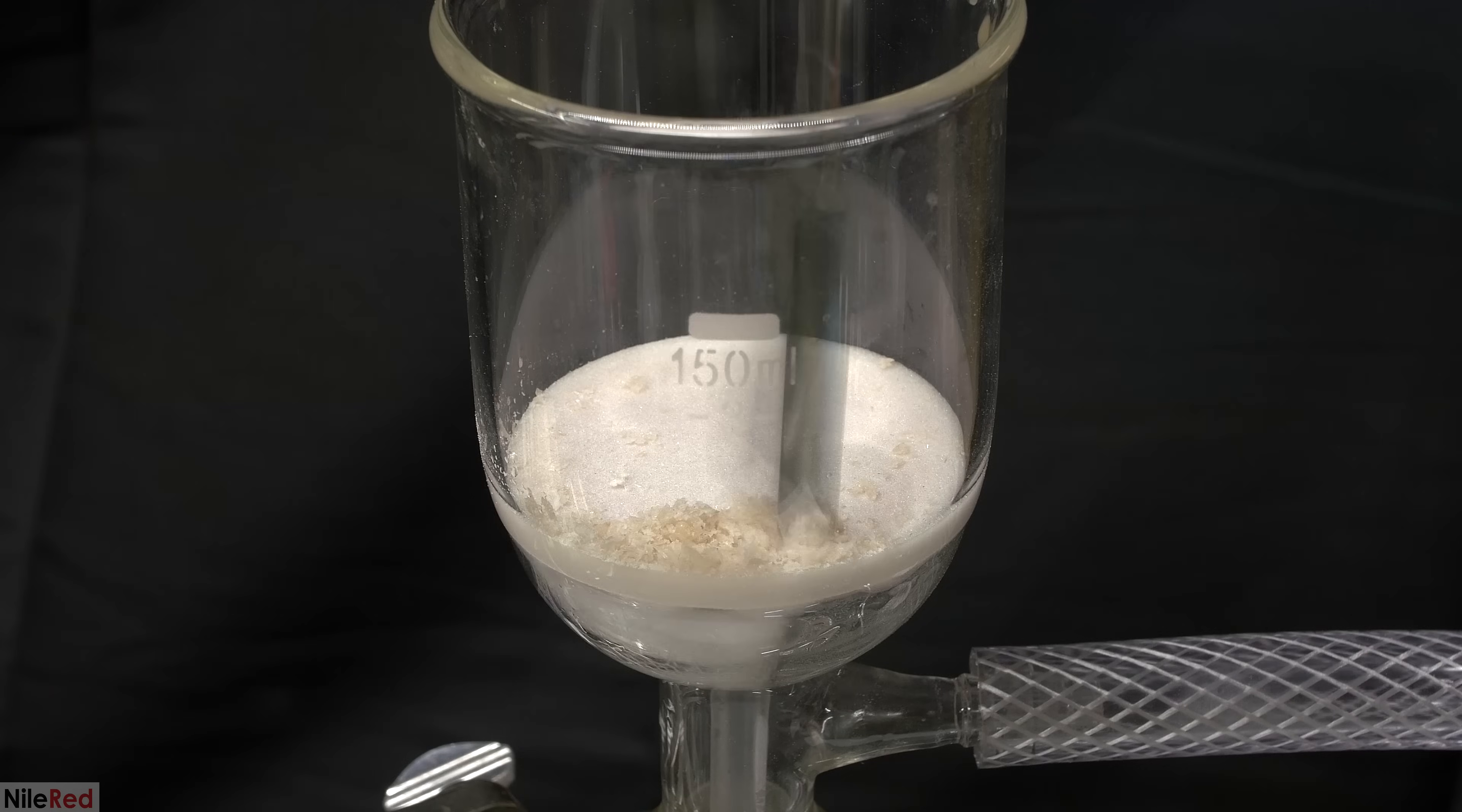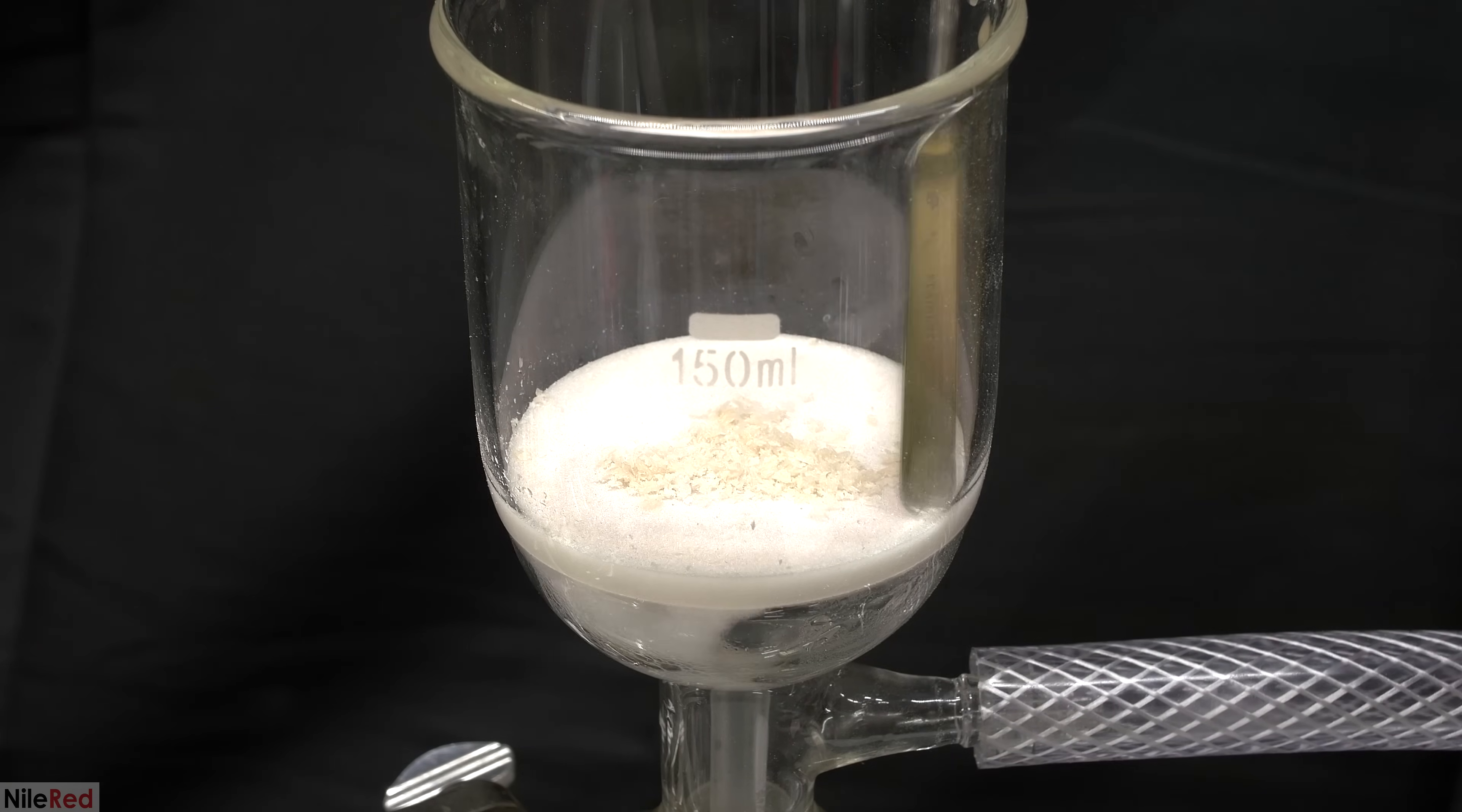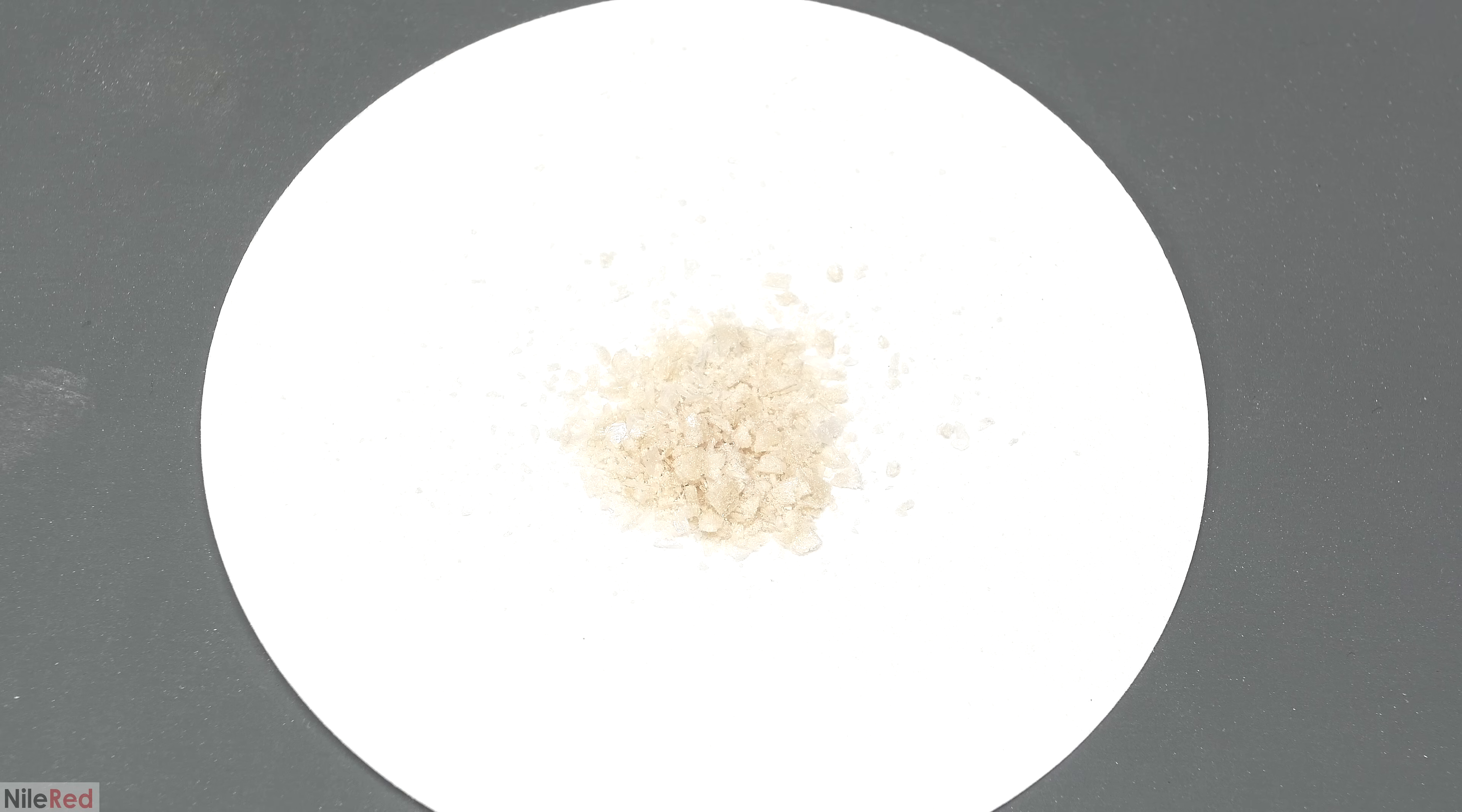I kept the vacuum going to dry them up, and using a metal spatula, I scraped them off the filter. The crystals were transferred to a filter paper, and although they're not super brown here, they're still evidently discolored.